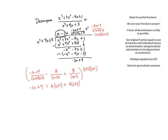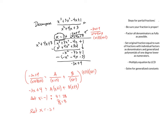Solving for the constants: letting x equal negative 1, the left side gives 7 equals 2B, so B is 7/2. Then letting x equal negative 3, the left side gives 13, and the right side gives negative 2A with B going away. So A is negative 13/2.